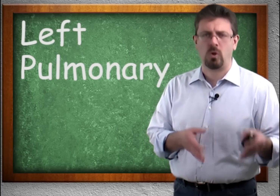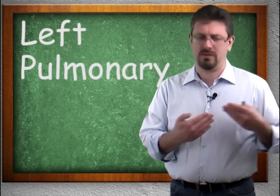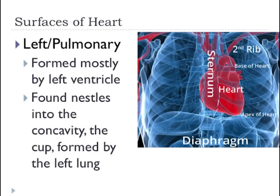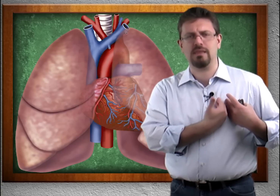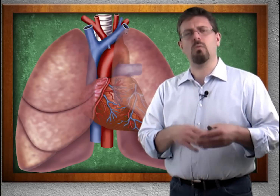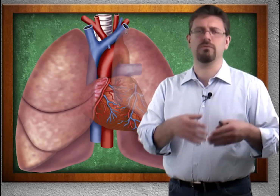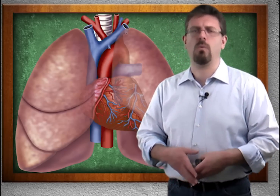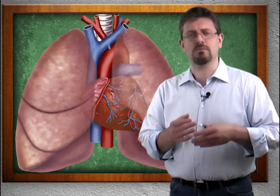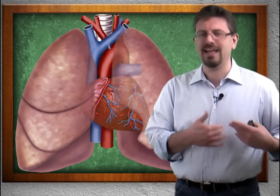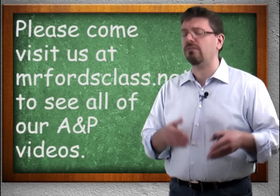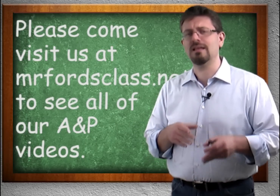Finally, we have the left or pulmonary surface, formed mostly by the left ventricle, found nestled in the concavity of the left lung. There is a little indentation in the left lung where the heart rests — which is why the right lung has three lobes while the left lung has only two lobes, to give the heart that extra space. In the next video, we'll take a look at the layers of the heart.